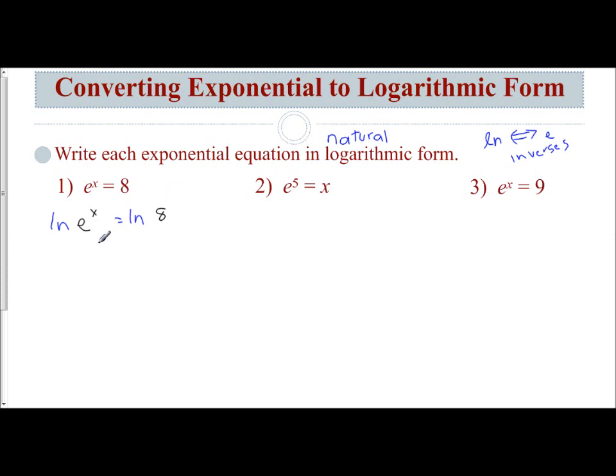The way that helps us is I can apply my power property of logs. I can take my variable in the exponent and bring it down to make it the coefficient of my logarithm. So I have x times the natural log of e equals the natural log of 8. Remember, natural log of e is 1, and so that cancels out. We're left with x equals the natural log of 8, ln of 8. That is our equivalent logarithmic form.